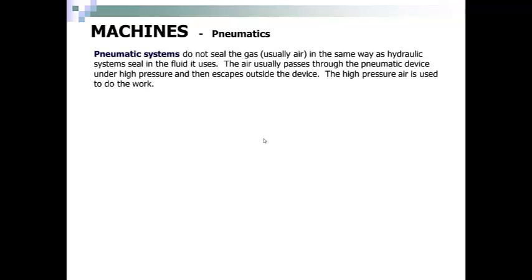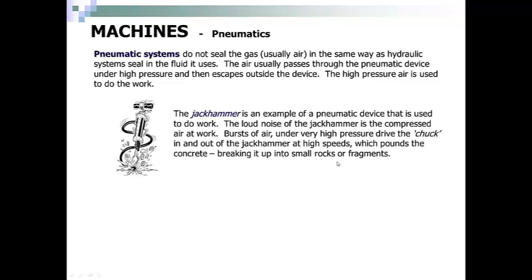Pneumatic systems do not seal the gas, usually air, in the same way as hydraulic systems seal the fluid it uses. The air usually passes through the pneumatic device under pressure, and it then escapes outside the device. The high-pressure air is used to do the work. A pneumatic jackhammer is an example of a pneumatic device that is used to do work. The loud noise of the jackhammer is the compressed air at work. Bursts of air under very high pressure drive the chuck in and out of the jackhammer at high speeds, which pound the concrete, breaking it into smaller fragments.